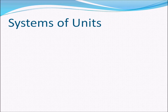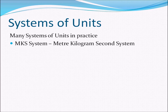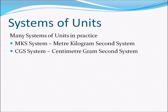Before discussing the three types of units in detail, let's look at different systems of units. Because of geographical and historical reasons, many different systems have been used worldwide. One of the most familiar is the MKS system — meter, kilogram, second — where the standard unit for length is one meter, for mass is one kilogram, and for time is one second. There is also the CGS system, where the standard unit for length is one centimeter, for mass is one gram, and for time is still one second.